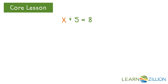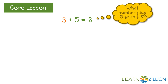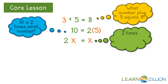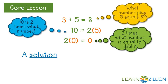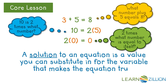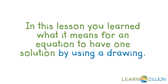So let's review. The first equation we looked at had the variable on the left. The second equation had the variable on the right. And the last equation had the variable on both sides. No matter where the variable is located, it is important to pay attention to all of the numbers, variables, and operations on both sides of the equal sign, and remember that the values of both sides have to be the same. In other words, a solution to an equation is a value you can substitute in for the variable that makes the equation true. In this lesson, you learned what it means for an equation to have one solution by using a drawing.